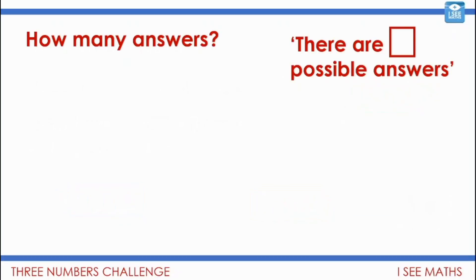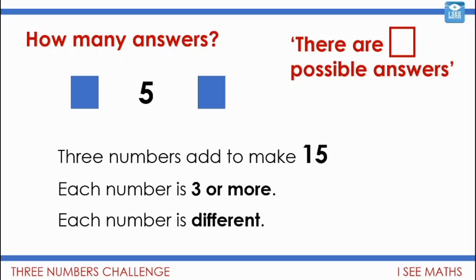Well we're going to have a go at a challenge and one of the key skills is for you to be able to say how many answers there are. So I want you to be able to say eventually there are and however many possible answers you think there are to the question. That's the skill we're going to practice now. So we're going to use the same example that we've just looked at. Three numbers add to make 15. Each number is three or more. Each number is different. One of the numbers is five. What could the other numbers be? How many possible answers are there using whole numbers? Pause the video and have a go.